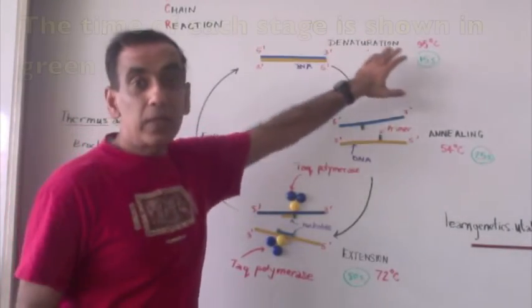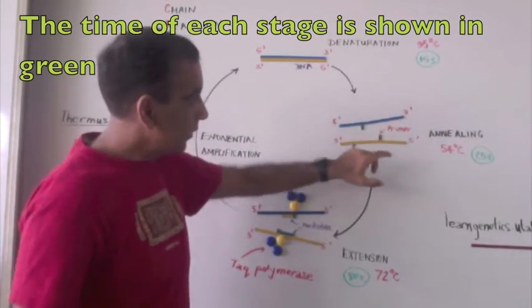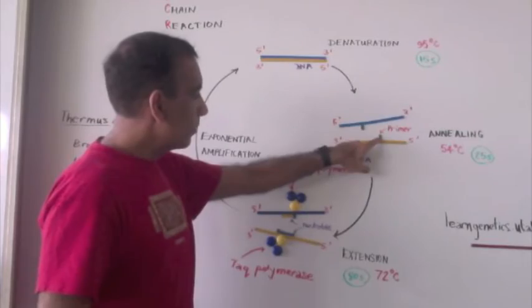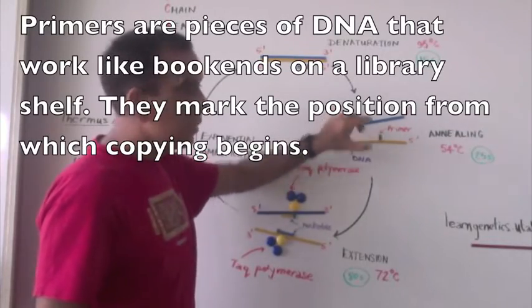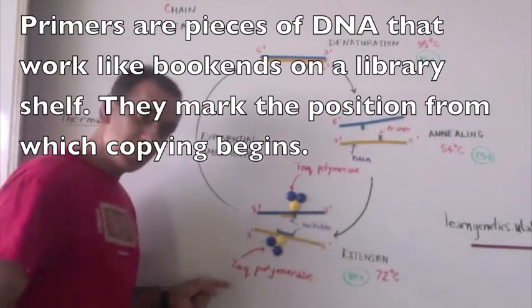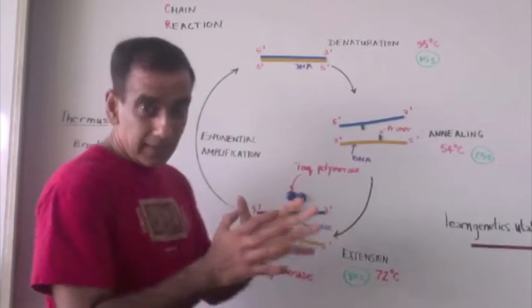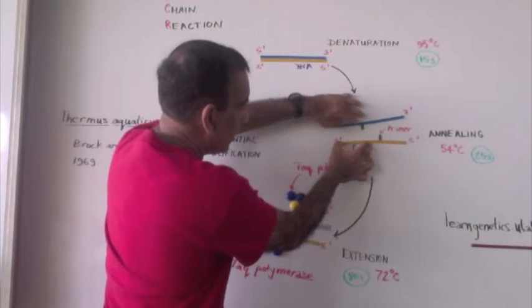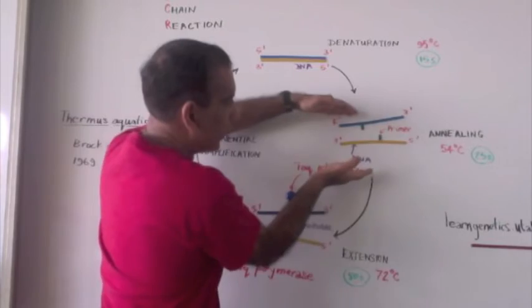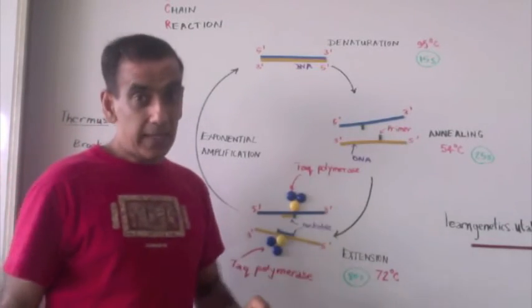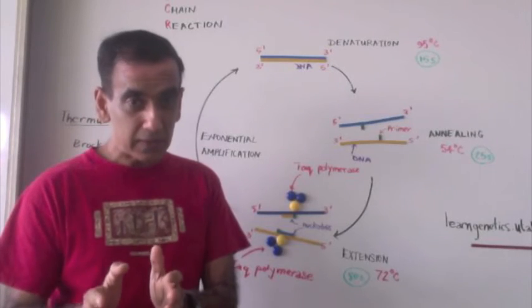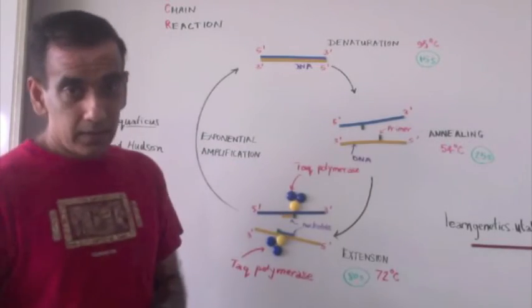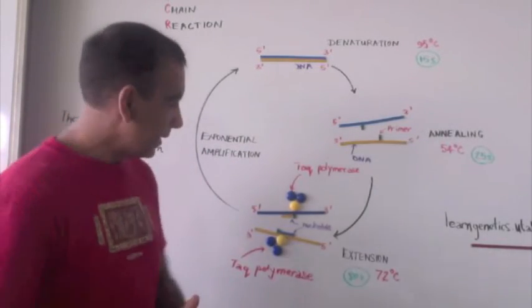The mixture is cooled to 54 degrees Celsius. Included in that mix would be primers and nucleotides and, of course, the enzyme, TAC polymerase. At this temperature of 54, the strands of the double helix would have a tendency to rejoin or to anneal. But if primers are added and the concentration of the primers is significant enough, then the primers prevent the annealing of the DNA strands.